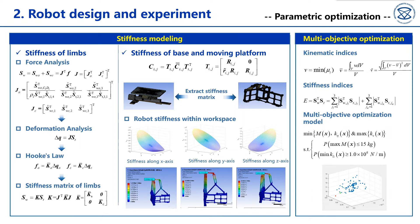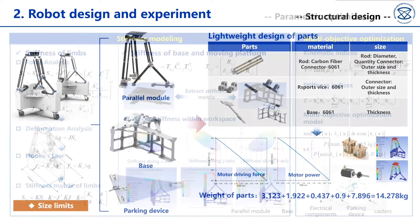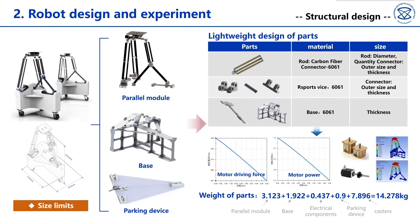With the available kinematic and stiffness models and indices, the multi-objective optimization model can be built. The design requirements, including workspace and payload-to-weight ratio, are regarded as constraints. By the particle swarm optimization algorithm, the dimension of the robot is obtained. Then, the prototype is built based on the optimized dimension.